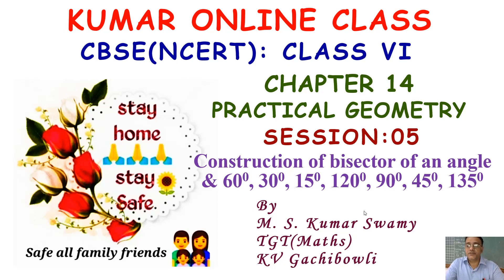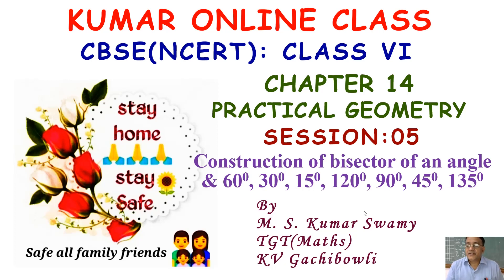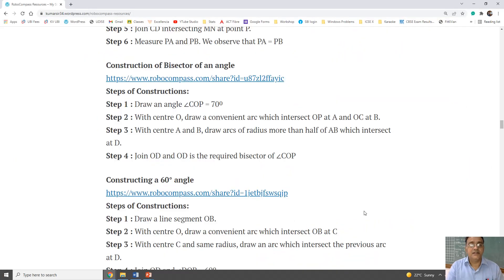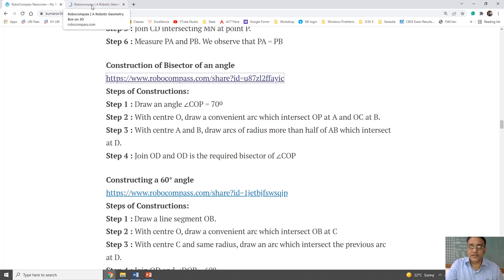Let us start the session. Today we are going to start session number 5 of chapter number 14, Practical Geometry. In this session we are going to learn about construction of bisector of a given angle, and we will see how 60 degree, 30 degree, 15 degree, 120 degree, 90 degree, 45 degree, and 135 degree can be constructed using a compass.